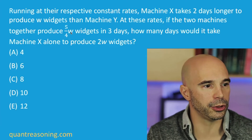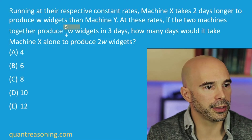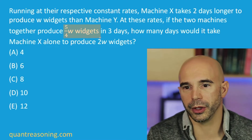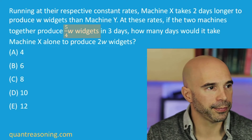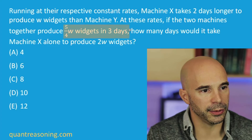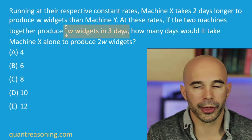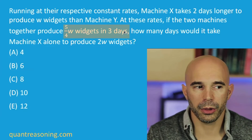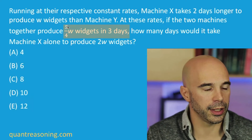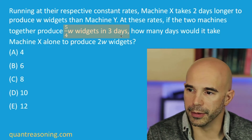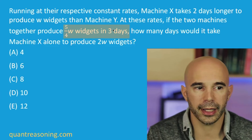At these rates, if the two machines together produce — now this is super annoying — we were talking about W widgets and now we're talking about five-fourths W widgets. So we're no longer on a level playing field, and I would like the work to be the same work. But I can fix that pretty easily. If you can make this many widgets in three days, how long would it take to make a single W? It would take less time — if you only wanted to produce W instead of five-fourths W, it would take less time.